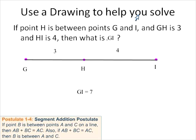However, if we hadn't drawn this line and we hadn't labeled these points, this would be kind of a tough question. Point H is between points G and I. GH is 3. HI is 4. What is GI? That kind of is a challenging thing to understand. So I encourage you, when you see these types of questions, that you draw it out.